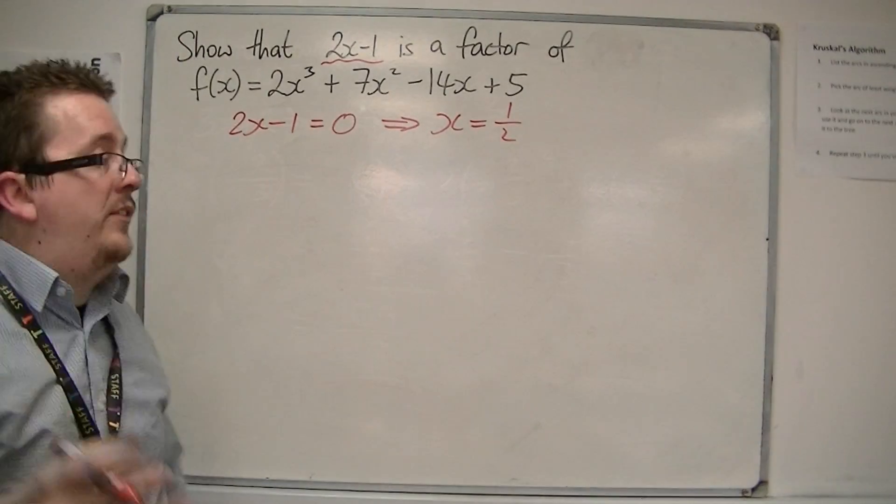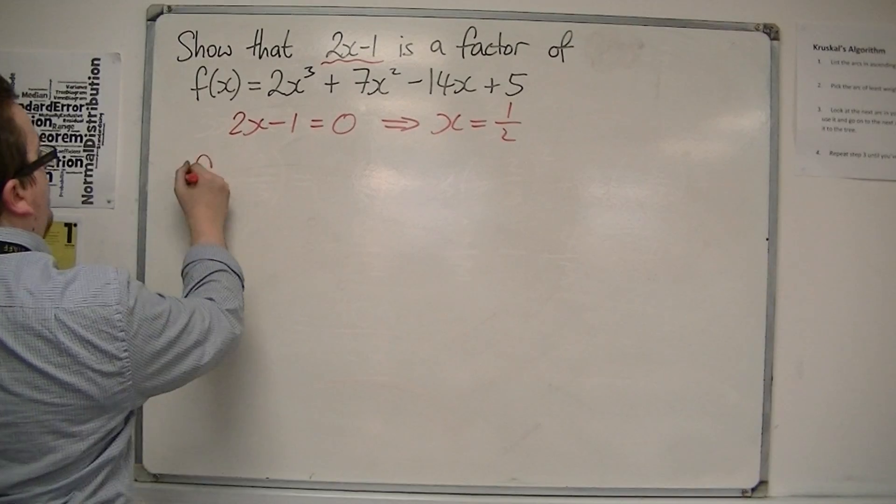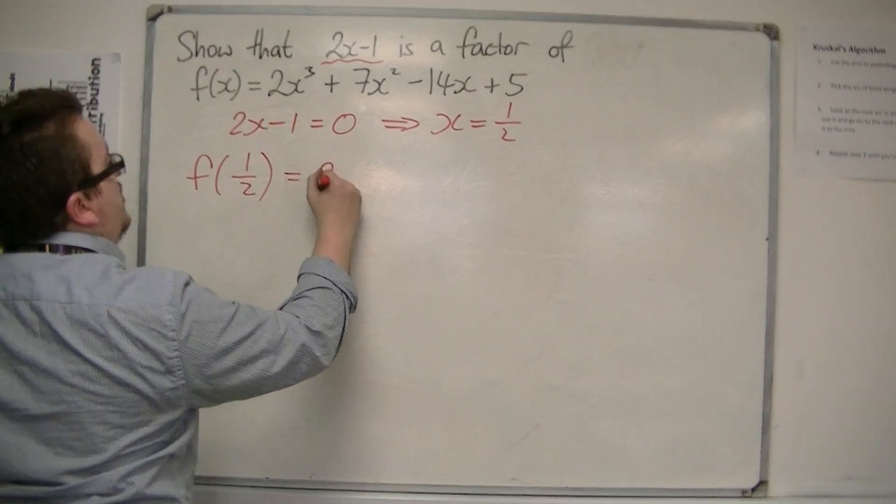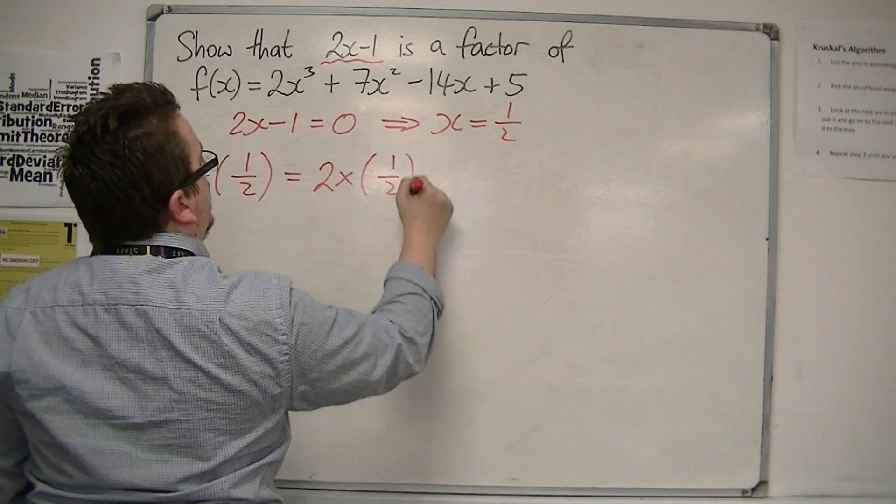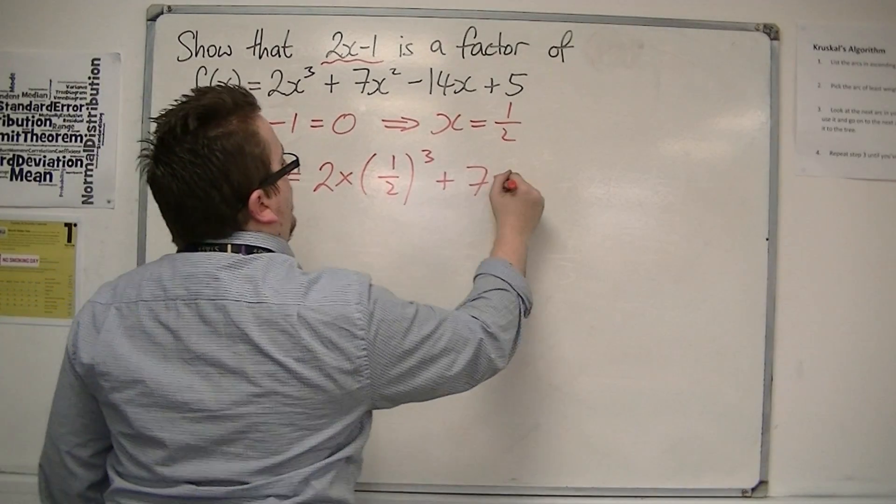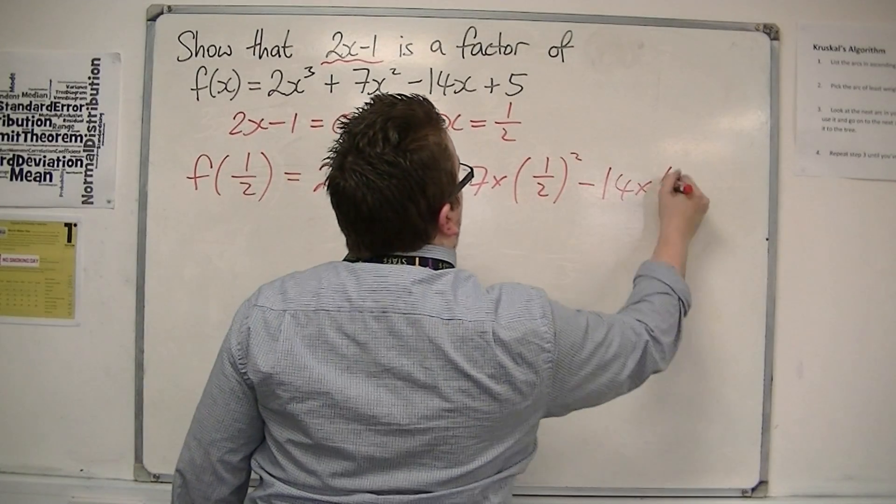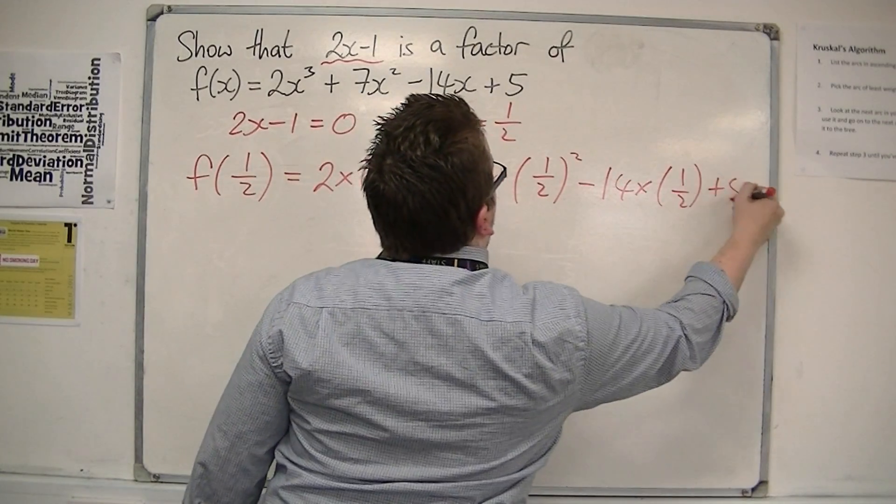So we substitute x = 1/2 into the function. We want f(1/2), which is 2(1/2)³ + 7(1/2)² - 14(1/2) + 5.